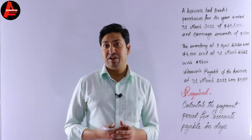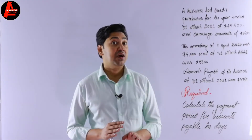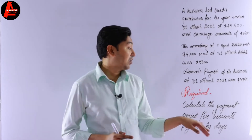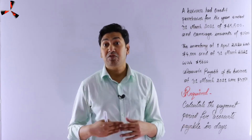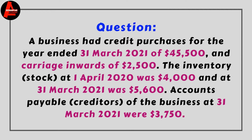First of all, let us have a look at the question on the screen. A business had credit purchases for the year ended 31st March 2021 of $45,500, and carriage inwards of $2,500. Inventory at 1st April 2020 was $4,000 and at 31st March 2021 was $5,600. These two inventory items are not required to calculate this ratio, but they are given so you can check your understanding and extract the correct item.